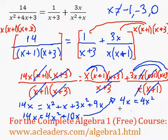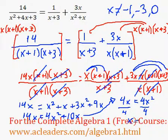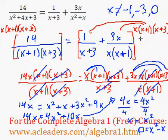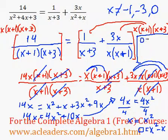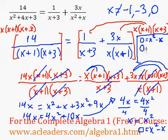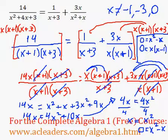Now we're close to the final answer. I can divide both sides by 4, so we have x equals x squared. I can bring over the x, which gives me 0 equals x squared minus x. Now I can factor out an x and get x times x minus 1. So our answers will be x equals 0, or x equals 1, because 1 minus 1 would be 0.